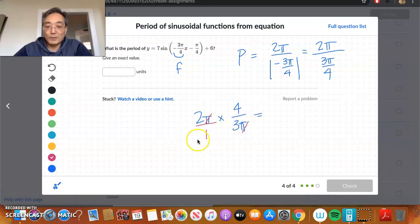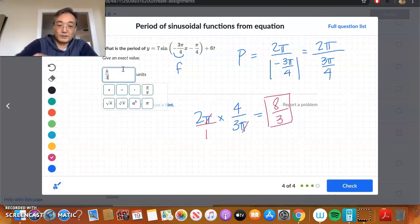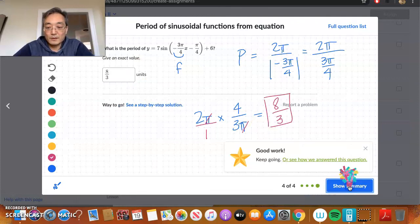So, the pi's cancel out. Now we multiply across. 2 times 4 is 8. 1 times 3 is 3. So, now we have our period. Period is 8 thirds. And let's type it in. So, 8 thirds is our period. And that is correct. Alright. Take care.